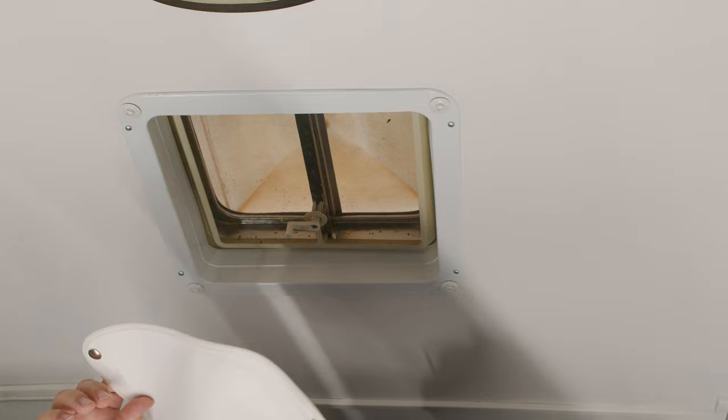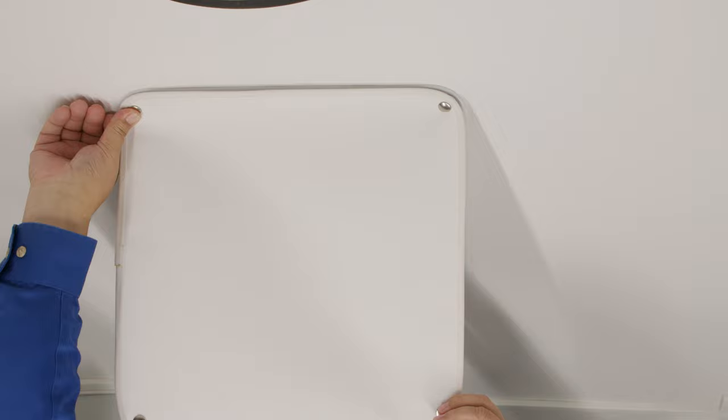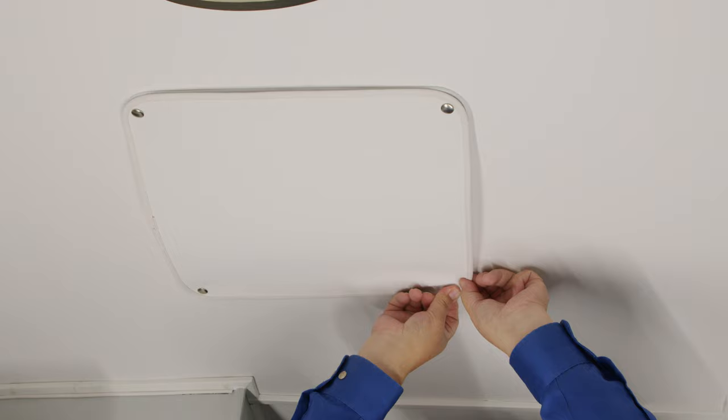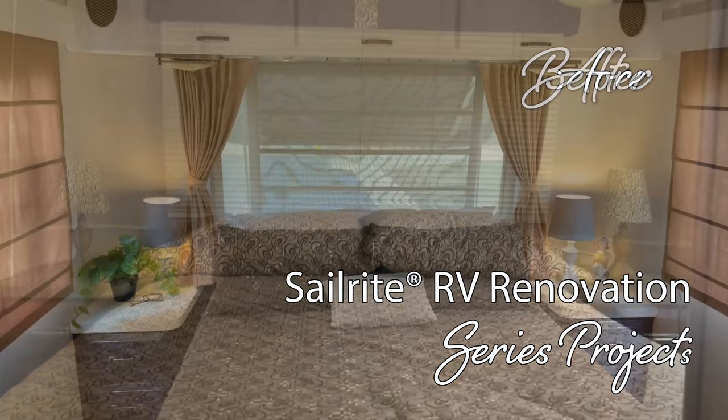This vent shade is installed with snads and snaps and has a blackout fabric on the backside to reduce the light coming through. This video is part of our Airstream Argosy renovation. We'll be renovating an Airstream from top to bottom, inside and out. Join us for this exciting video series.